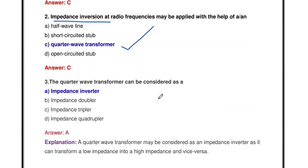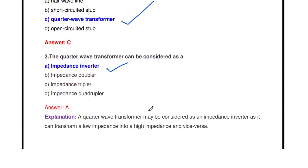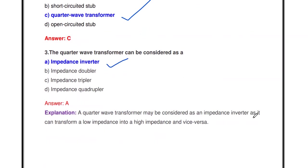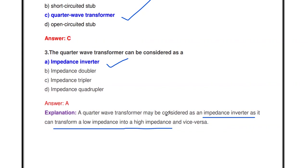A quarter wave transformer can be considered as an impedance inverter — not an impedance doubler, tripler, or quadrupler. It is used as an impedance inverter, which means it can transform low impedance to high impedance as well as high impedance to low impedance.